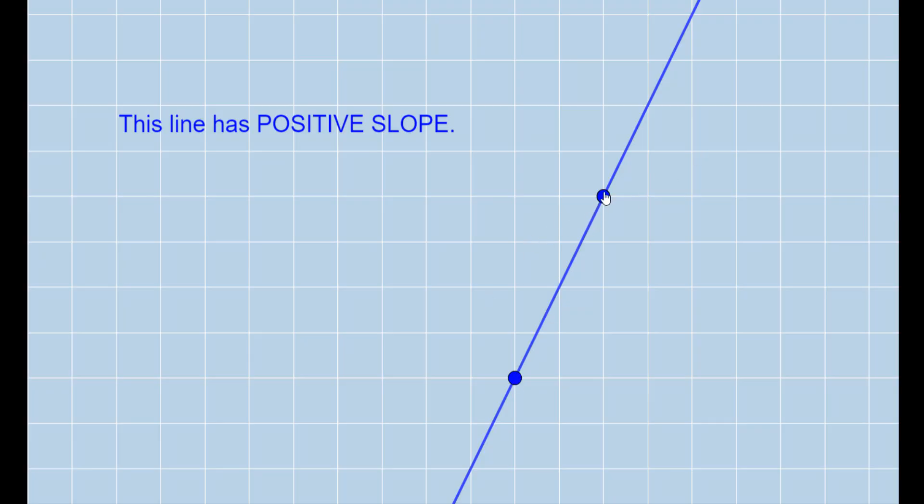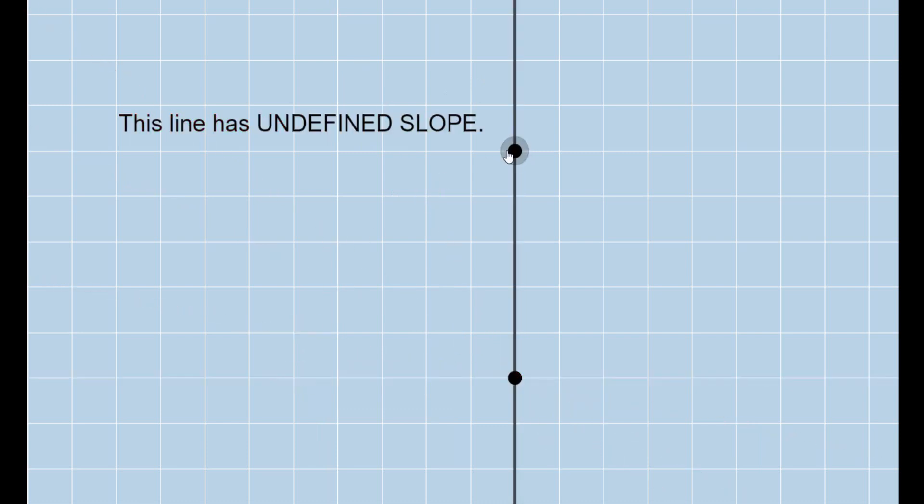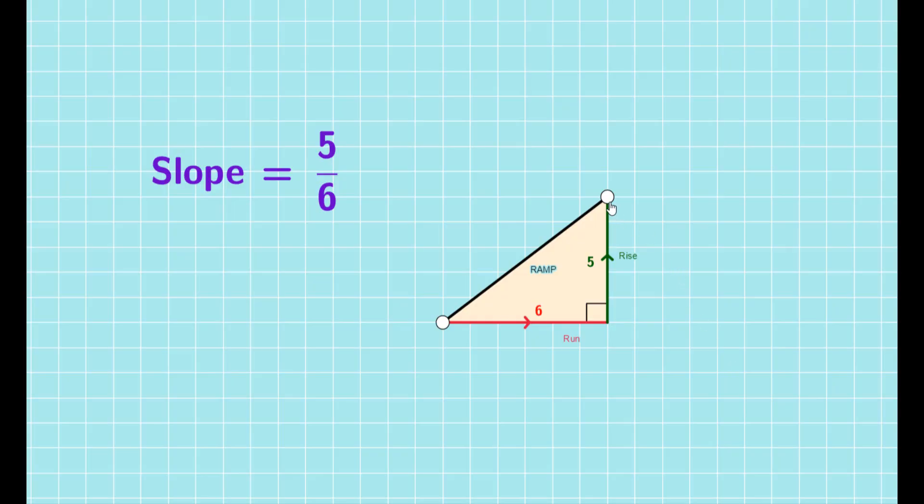This is a line passing through these two points. I will change the location of one point and you keep an eye here—this will tell you how the values of slope are changing. Now it is positive, still positive, now it is negative, still negative, and now it's zero. So we see that the slope of a line can be zero, positive, or negative.